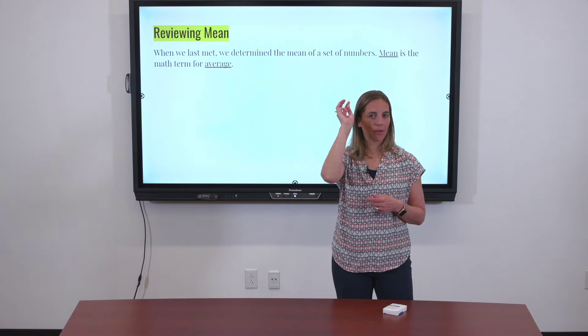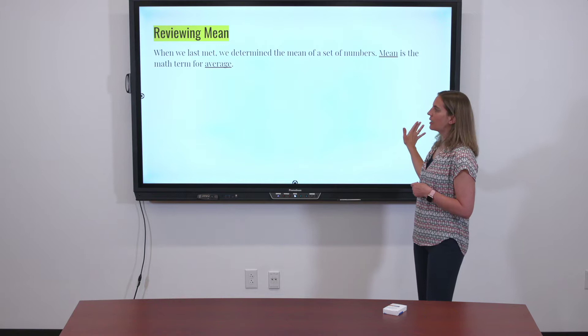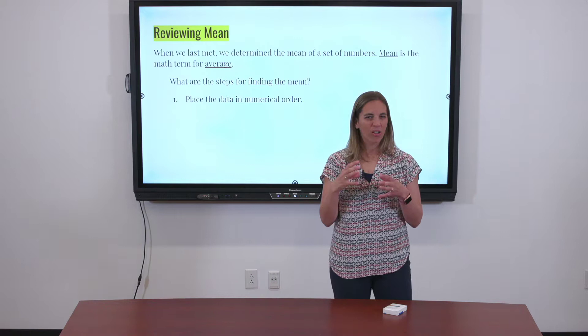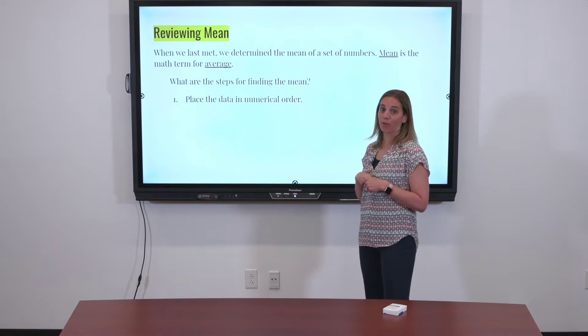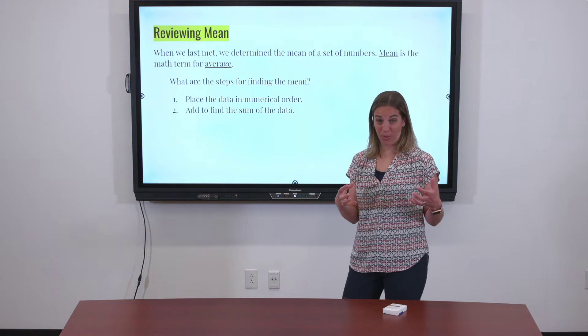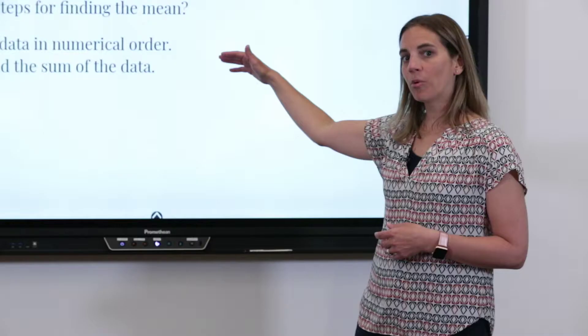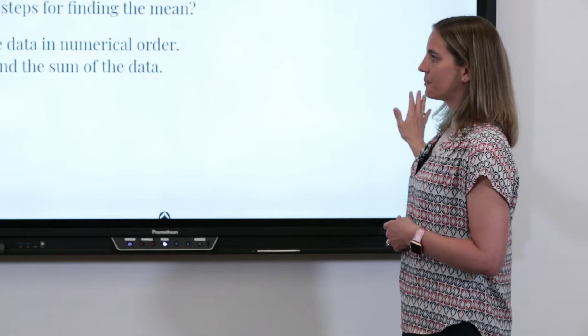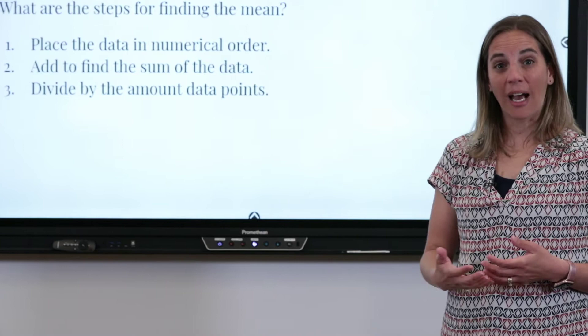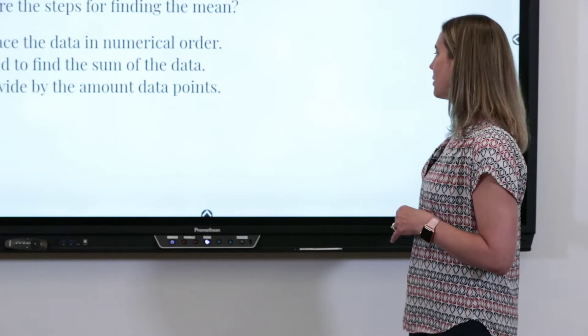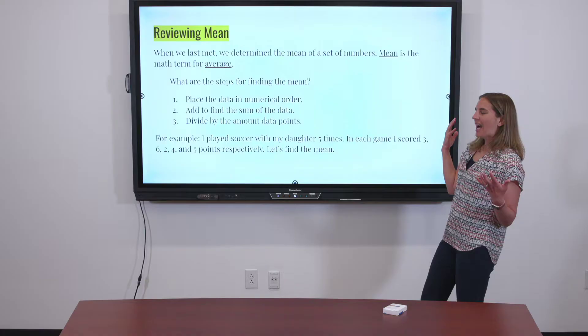There were three steps for finding the mean. In your brain, think about those three steps. Our first step is to take your data — all of your numbers — and put them in order from least to greatest, which in math we call putting them in numerical order. Our second step is to add all of those numbers to find the sum of our data. And if you said divide by the amount of data points that you have, you are absolutely right. That's a great memory, and if you didn't remember, that was a great refresher.